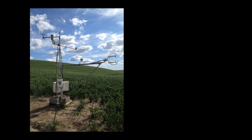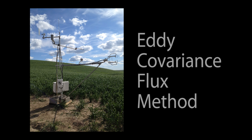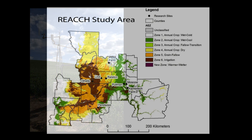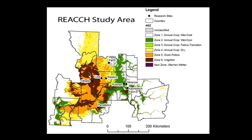Flux tower measurements collected over the course of a year result in an annual budget of CO2 losses and gains from the environment. By placing eddy flux towers at sites across the study region, scientists hope to better understand how meteorology and management practices impact greenhouse gas emissions.